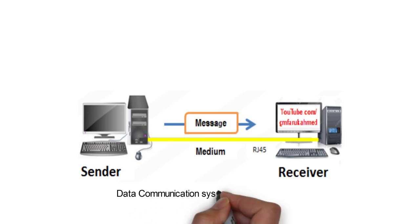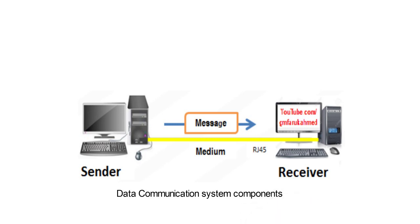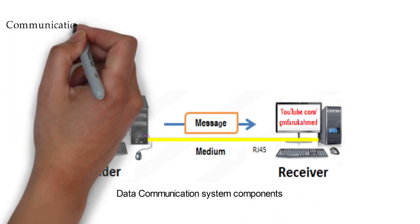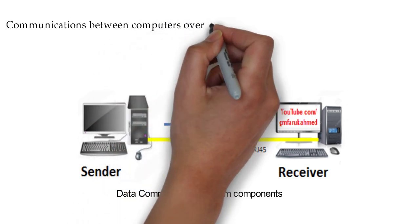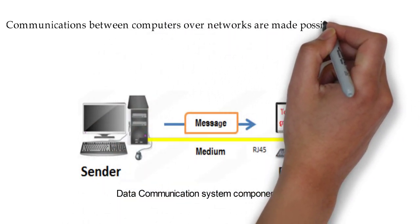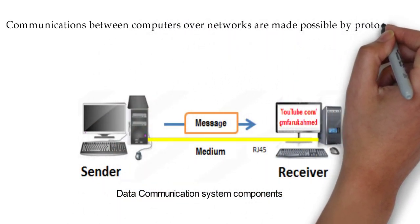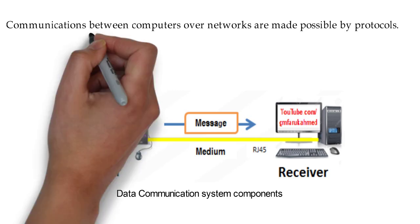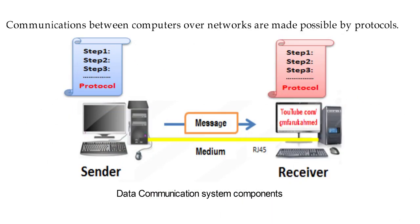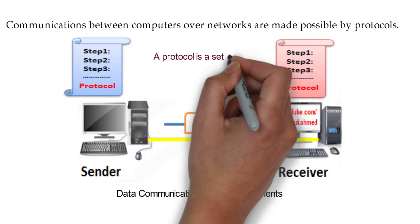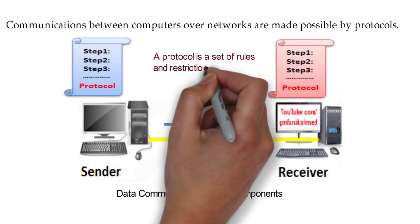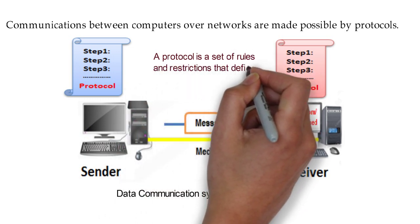In this section, sender, medium, and receiver are the most important parts. Communication between computers over networks is made possible by protocols. A protocol is a set of rules and restrictions that define how data is transmitted over a network medium.